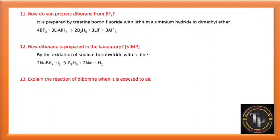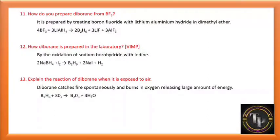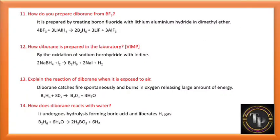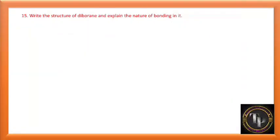Explain the reaction of diborane when exposed to air. B2H6 + O2 gives B2O3; a large amount of energy is released. Diborane catches fire spontaneously and burns in oxygen releasing large amounts of energy. How does diborane react with water? Diborane reacts with water to give orthoboric acid H3BO3 with liberation of H2 gas — it undergoes hydrolysis.